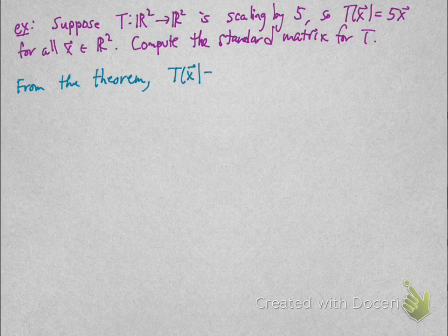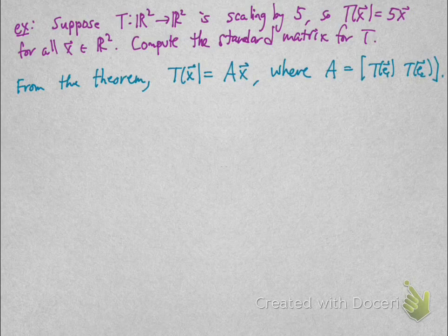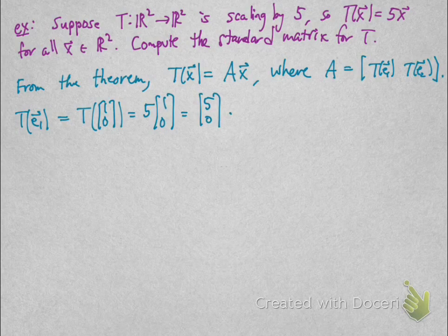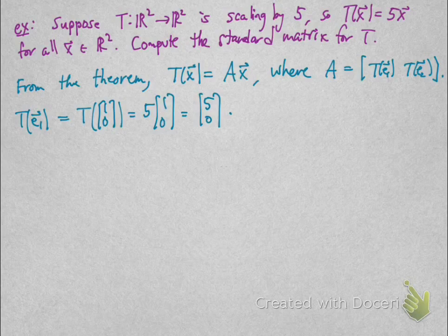From the theorem, the standard matrix is matrix A, whose first column is T(E_1) and second column is T(E_2). We compute these two vectors. T(E_1) is T evaluated at (1,0), which is 5 times (1,0), so that's (5,0).